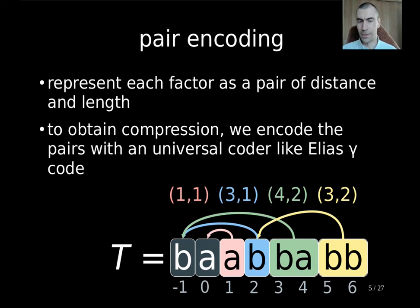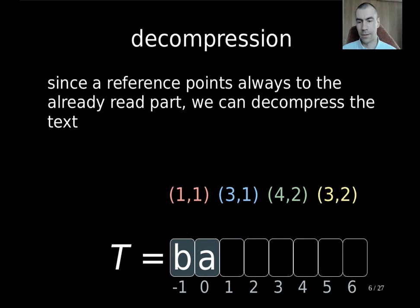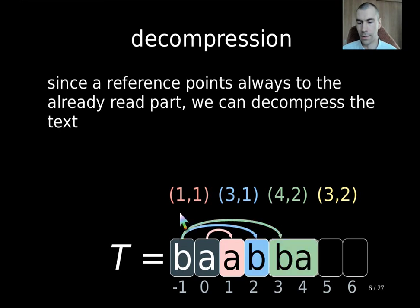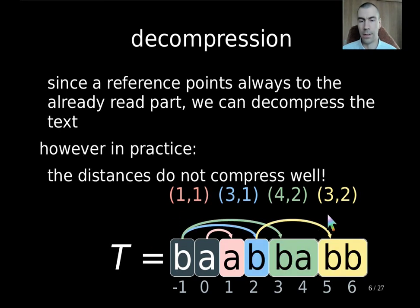Finally, just by having these pairs we can decode, so restoring the original text back by just looking at the information of these pairs like here. So this means copy from distance 1 one character, distance 3 one character, distance 4 two characters and so on. The problem is however that these distances do not compress well because they can be arbitrarily large.